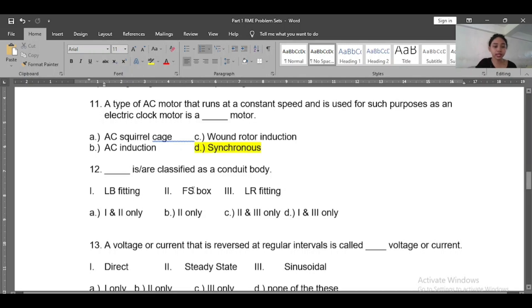Number twelve: Blank is/are classified as a conduit body. So the answer is two and three - the LB fitting and LR fitting.